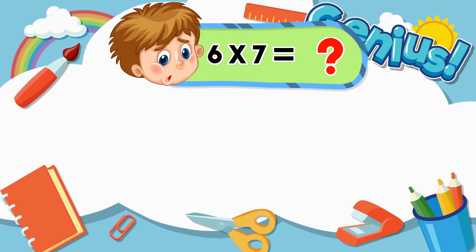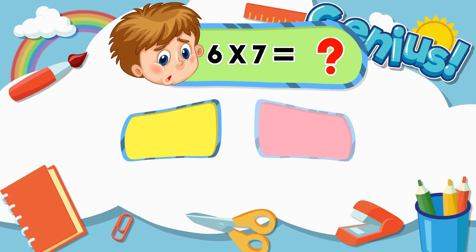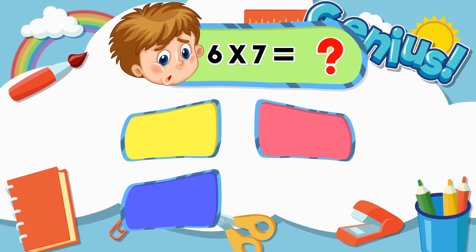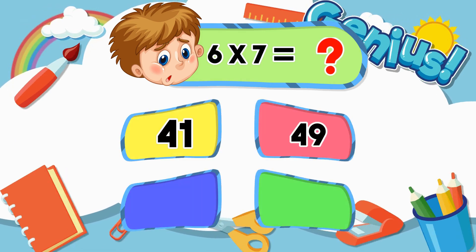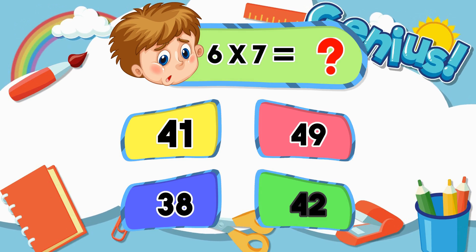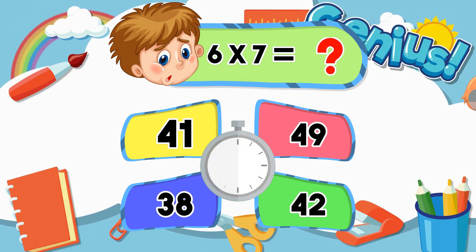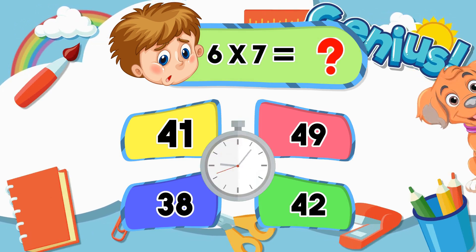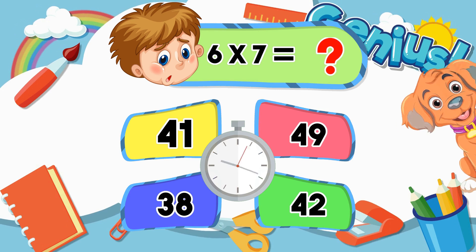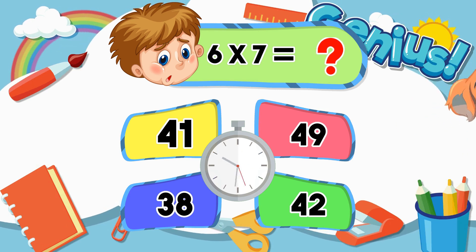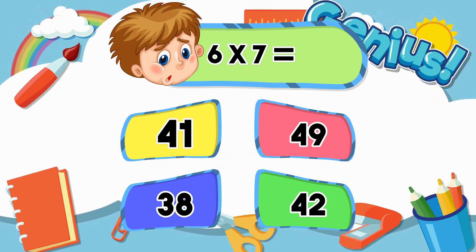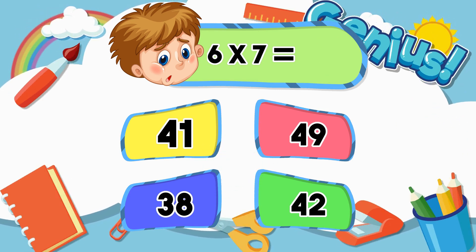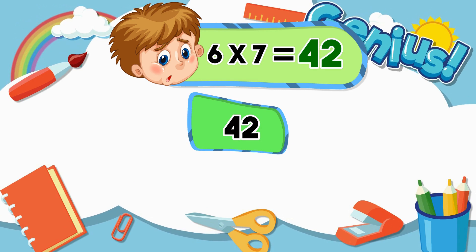What is 6 times 7? Options: 41, 49, 38, 42. The correct answer is 42.